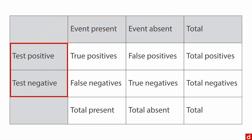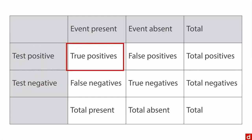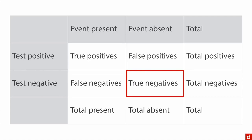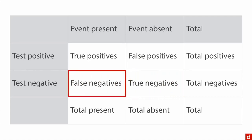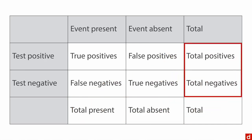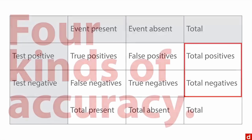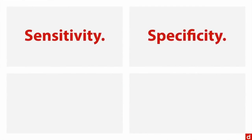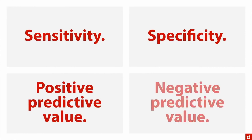On the left is whether the test or indicator suggests that a thing is or is not happening. Then you have combinations: true positives, where the test says it's happening and it really is; false positives, where the test says it's happening but it's not; true negatives, where the test says it isn't happening and that's correct; and false negatives, where the test says there's nothing going on but the event is in fact occurring. From this table, you get four kinds of accuracy: sensitivity, specificity, positive predictive value, and negative predictive value.